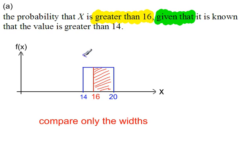And here's one of them, between 14 and 20. That was the restricted part of our graph, that has a width of 6. And the probability that x is greater than 16, this part, 16 to 20, that's a width of 4. So 4 out of 6 is the answer, or 2 thirds.